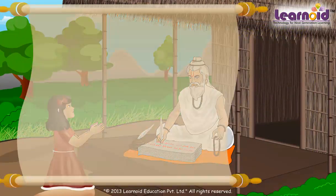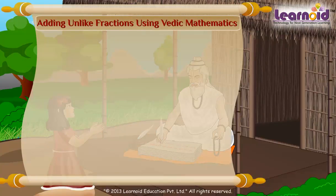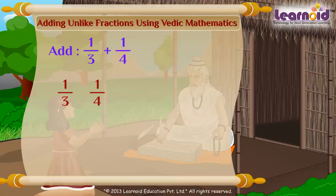Now see how it is done easily with Vedic Maths. We will use the formula vertically and crosswise. To get the numerator, multiply crosswise like this.